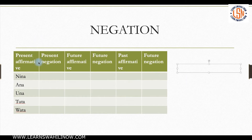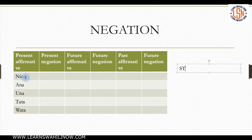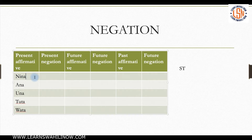Here we have the first part of the verb stem. If you remember our formula for writing a Swahili verb, it's usually subject-tense-object-verb, but for now I'm working with just the subject-tense part, because this is really what changes when you're negating a sentence. We're going to go through the present affirmative. So: nina, ana, una, tuta, wana — let's use the simple verb soma. Nina soma, ana soma, una soma, tuta soma, wana soma.